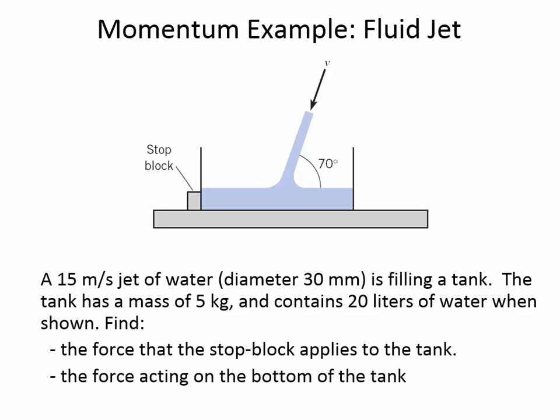The momentum equation for the x direction states that the sum of forces equals the sum of mass flow rate out times velocity out in x, minus the sum of mass flow rate in times velocity in in x. The left-hand side represents the force required to hold the system steady in view of the momentum effects occurring in the system. In this problem, the stop block force is the x-direction force and it will be to the right.